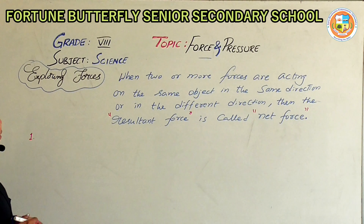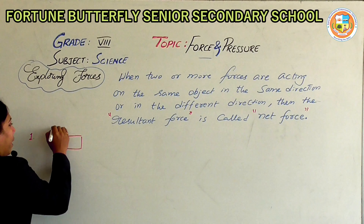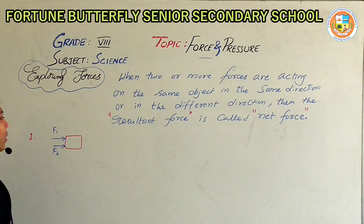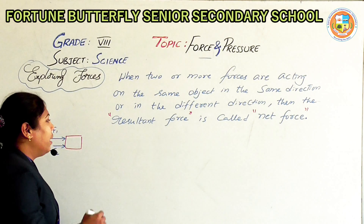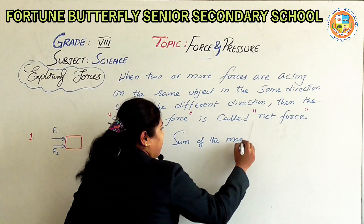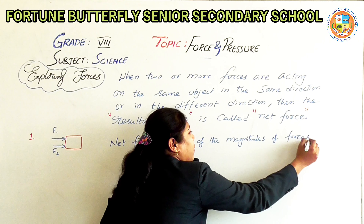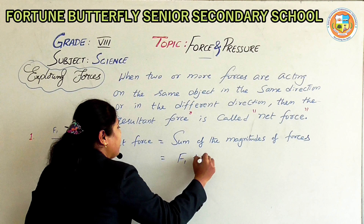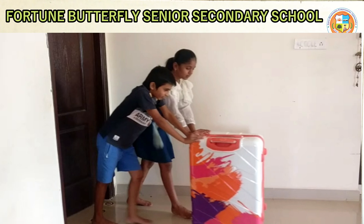There are three cases. The first case: on an object of mass M, two forces F1 and F2 are acting in the same direction. If two forces are acting on the same object in the same direction, then the net force is equal to the sum of the magnitudes of the forces — F1 plus F2 — and the direction will be in the direction of the applied force.